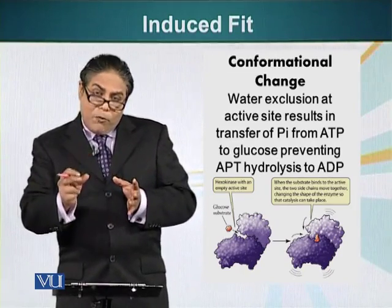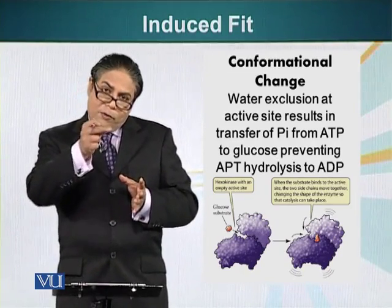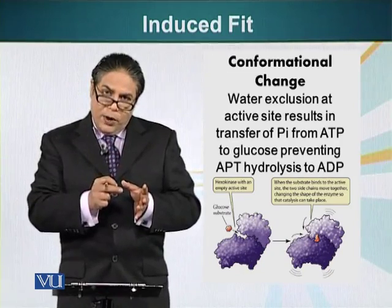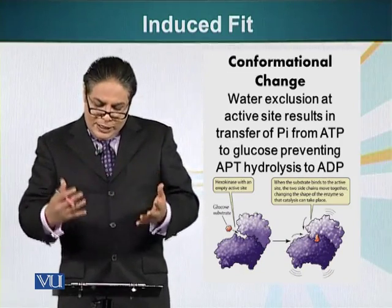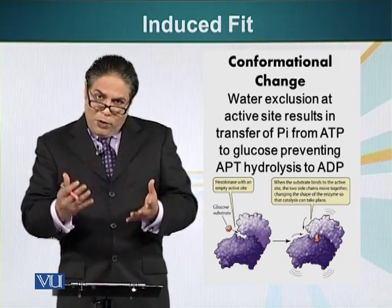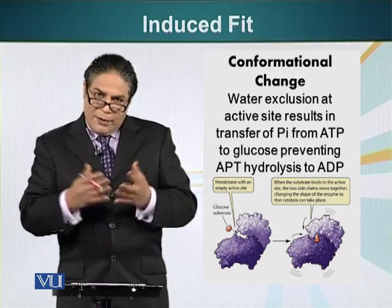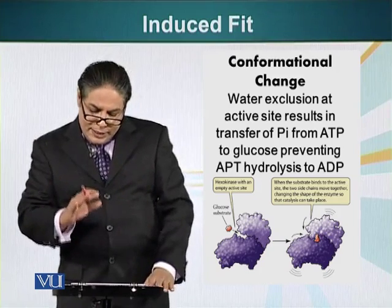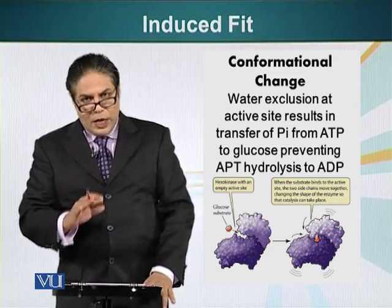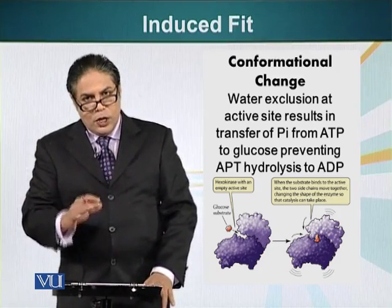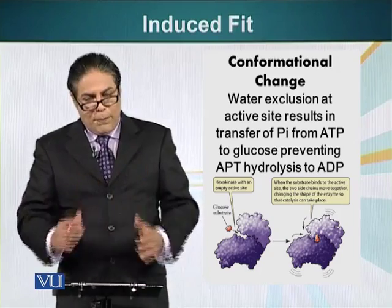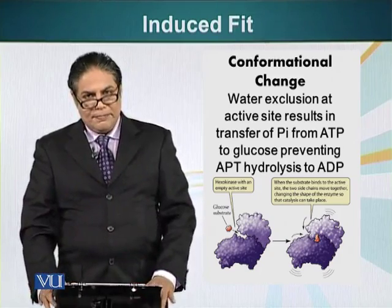By excluding water, the enzyme prevents the possibility that the phosphate group might attach to a proton and become free, releasing the energy. So that phosphate group is transferred to the glucose molecule rather than being lost if water were present. These are the different mechanisms enzymes use to facilitate or speed up a reaction.